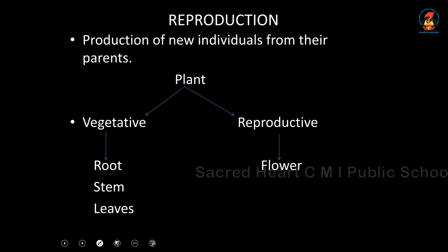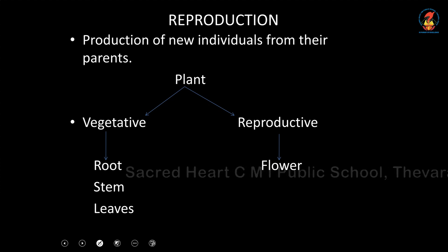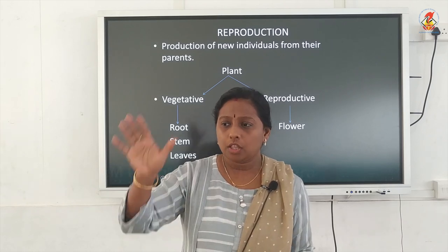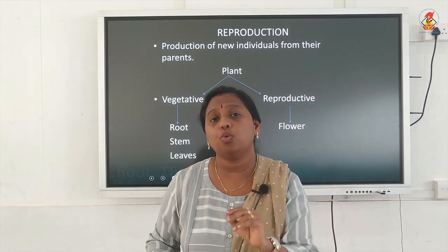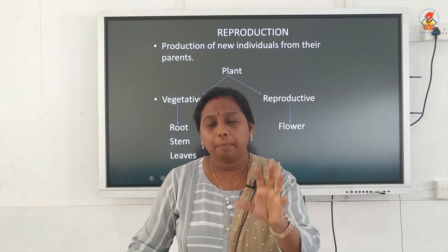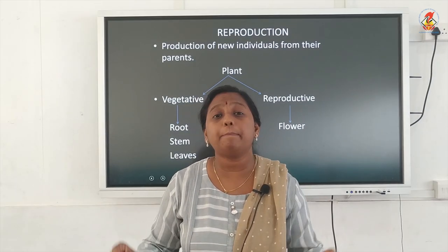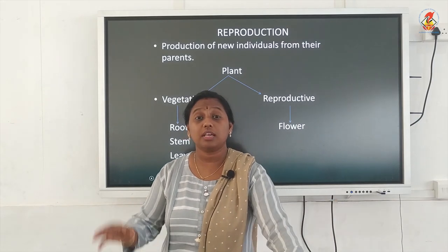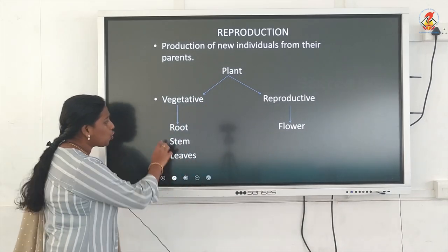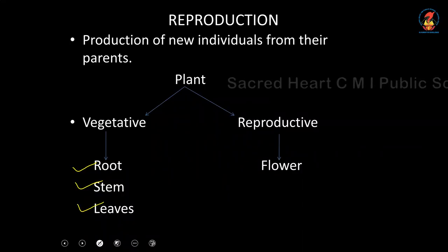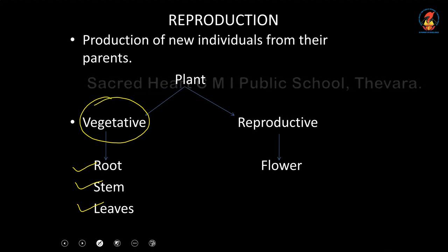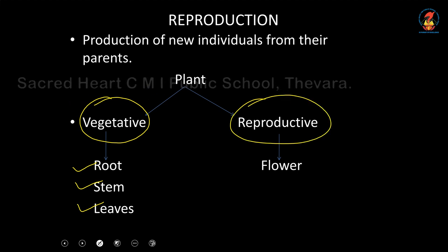In the case of a plant, all the different parts can be put under two headings. The flower is called the reproductive part of a plant — the reproductive organ of a plant is the flower. All other parts other than the flower — that means the root, the stem, the leaves — they are called the vegetative parts of a plant. So a plant has two parts: vegetative parts and reproductive parts.